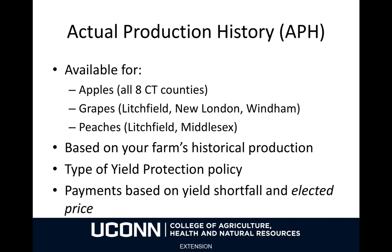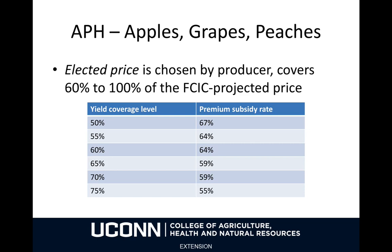Actual production history policies are available for apples in all eight Connecticut counties, for grapes in three counties — Litchfield, New London, and Windham — and for peaches in Litchfield and Middlesex counties. These policies are a type of yield protection, meaning they pay when yields fall. Payments are based on both yield shortfalls and the elected price — that is, the price you choose to insure your yield at. The elected price covers 60 to 100 percent of the FCIC's projected price. As your coverage increases, the premium subsidy rate decreases. You can choose a yield coverage level under the APH policy from between 50 and 75 percent, and the premium subsidy rate will be between 67 and 55 percent.